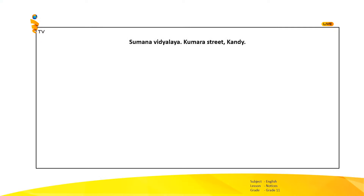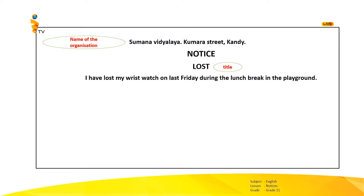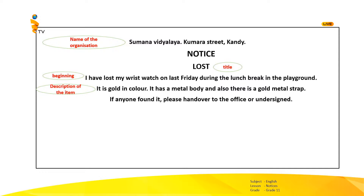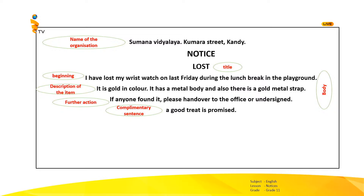Okay children, let's try to identify the key points of this lost notice. The name of the organisation should appear. The word 'Notice' should be there. 'Lost' is the title. 'I have lost my wristwatch on last Friday' is the beginning of the notice. 'It is gold in colour, it has a metal body and also there is a gold metal strap' — that is the description of the item. 'Please hand over to the office or undersign' is the further action to be done if anyone found it. And finally, 'A good treat is promised' is the complementary sentence.